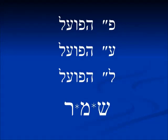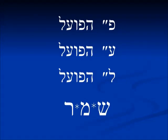All the names for the binyanim have the root pe-ayin-lamed in them. Pe-ayin-lamed is a verb meaning to do work or to do action. When we talk about pe hapo'al, we're talking about the first letter of the root — in the case of shamar, pe hapo'al is the shin. When we talk about ayin hapo'al, we're talking about the middle letter of the root — for shamar, ayin hapo'al is mem. Lamed hapo'al talks about the last letter of the root — in this example, it is resh. Now we'll see why we have these designations.